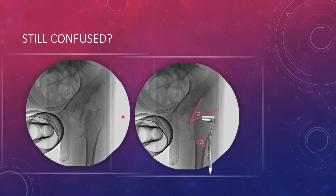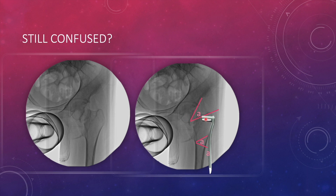A simpler intraoperative approach: recall how much correction is needed — this angle is nearly vertical, representing the correction amount. Using C-arm, superimpose your device on the affected side. The clearance angle between the shaft of the device and the shaft of the femur should equal the amount of correction needed. This tells you exactly where to drill the track for the screw, whether using dynamic hip screw, double-angle DHS, or condylar blade plate.